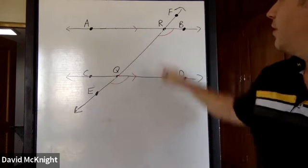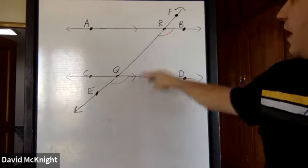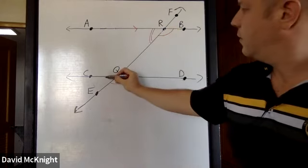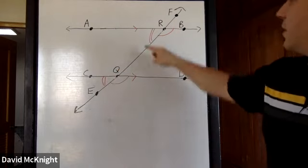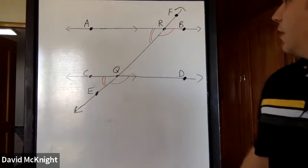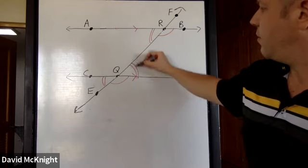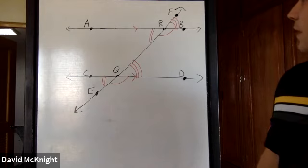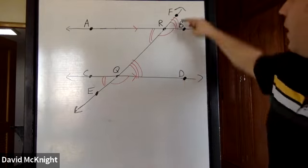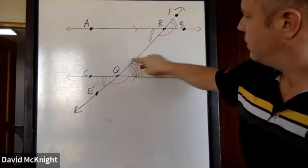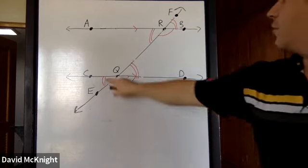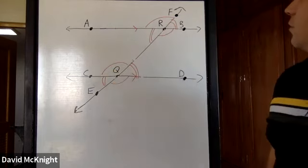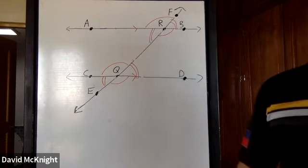Likewise, we can identify other pairs of corresponding angles that are also congruent. There are four pairs of corresponding angles in total, and each pair is congruent.